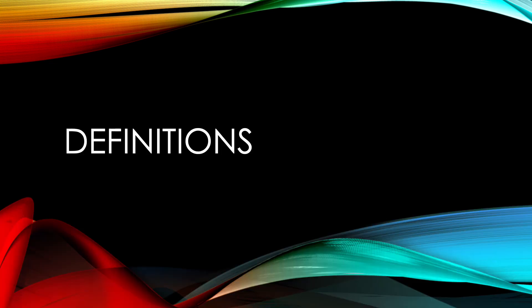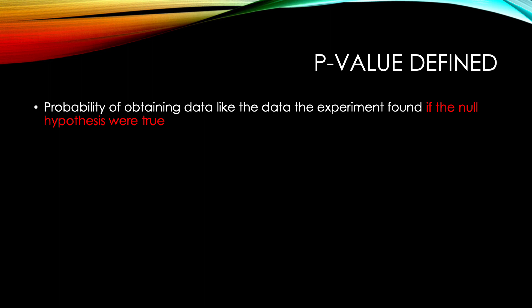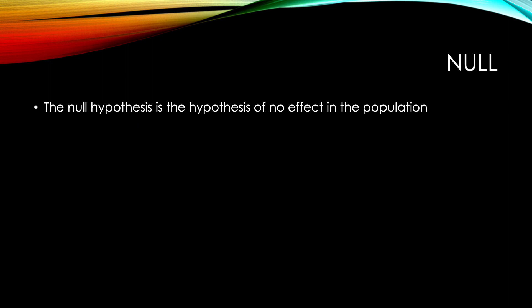Let's start with our definitions. A p-value is the probability of obtaining data like the data the experiment found if the null hypothesis were true. I need to define the null hypothesis. The null hypothesis is the hypothesis of no effect in the population — no effect of my IV on the DV. There's no impact of my independent variable on my dependent variable.